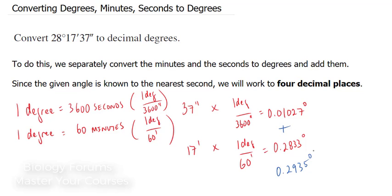Given that we've added these two numbers, we can now add this number to 28 degrees, which gives us a final answer of 28.2935.